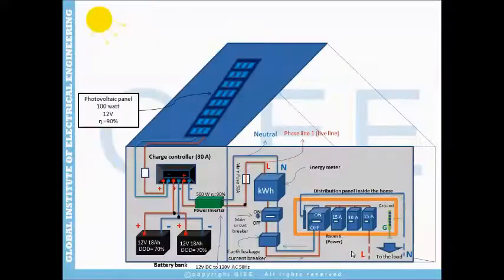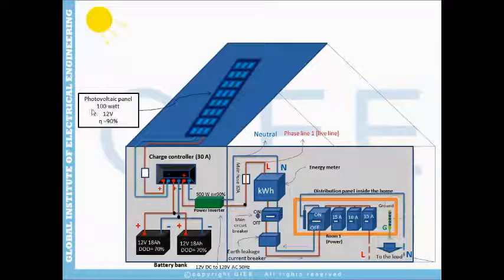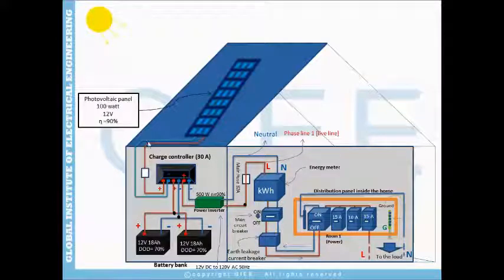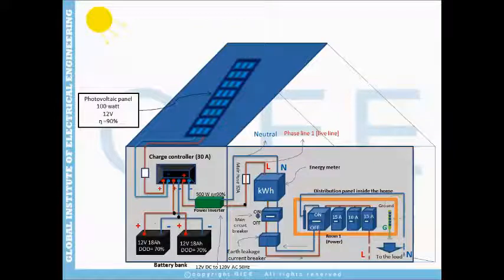This photovoltaic panel provides 100 watts of power at 12 volts, with an efficiency of 90 percent. The photovoltaic panel converts solar power to DC electricity. The charge controller has a rated current of 30 amps — this depends on our loads. We will talk about how to select the charge controller when we design the system.